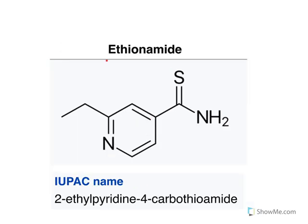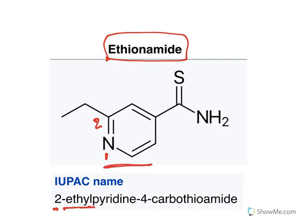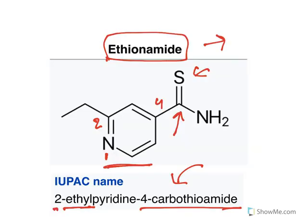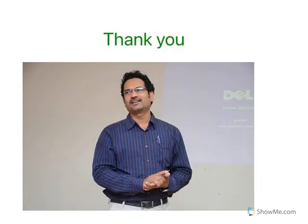Ethionamide: at the second position there is an ethyl group on a pyridine ring, and at the fourth position there is a carbothioamide group. Because sulfur is present instead of oxygen, it is called carbothioamide rather than carbamide. Like isoniazid, ethionamide affects mycolic acid biosynthesis. These are the chemistry aspects of anti-tubercular agents as given in the medicinal chemistry syllabus.